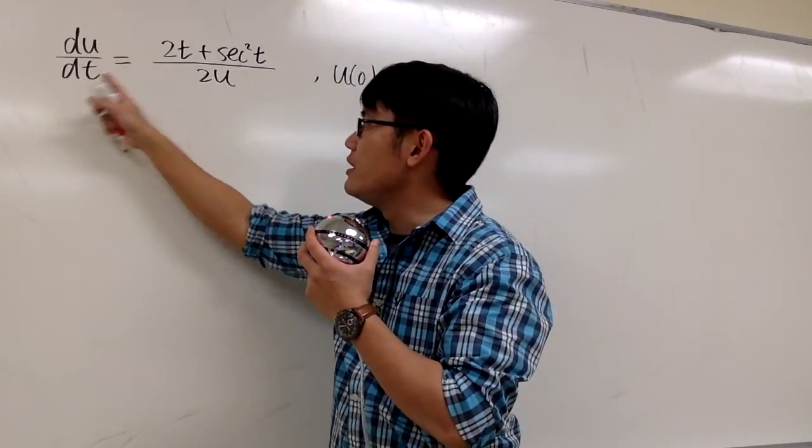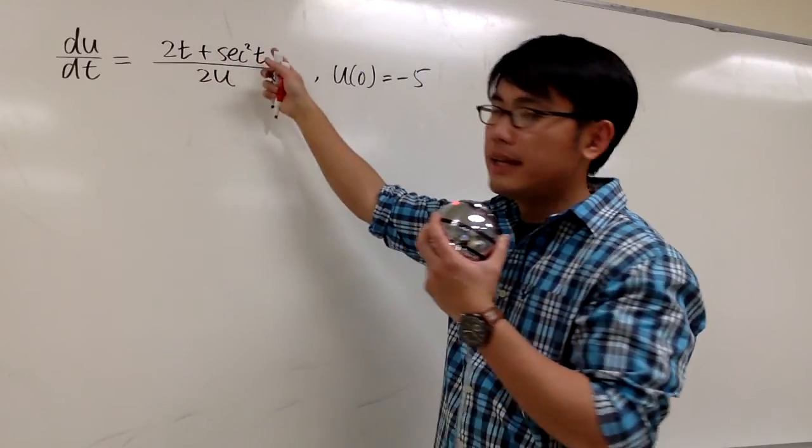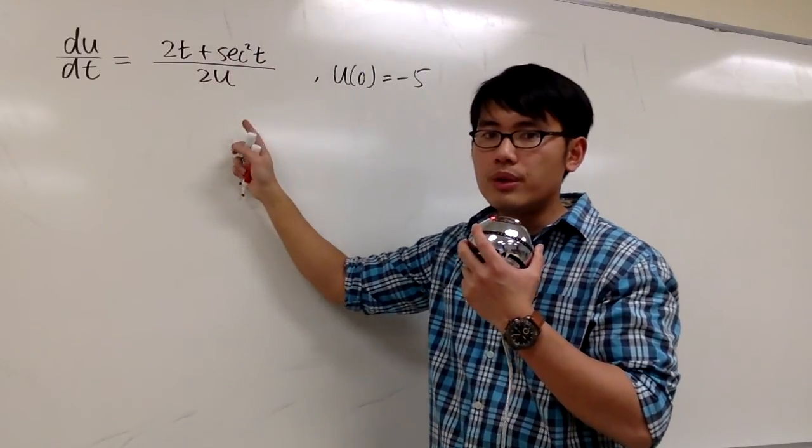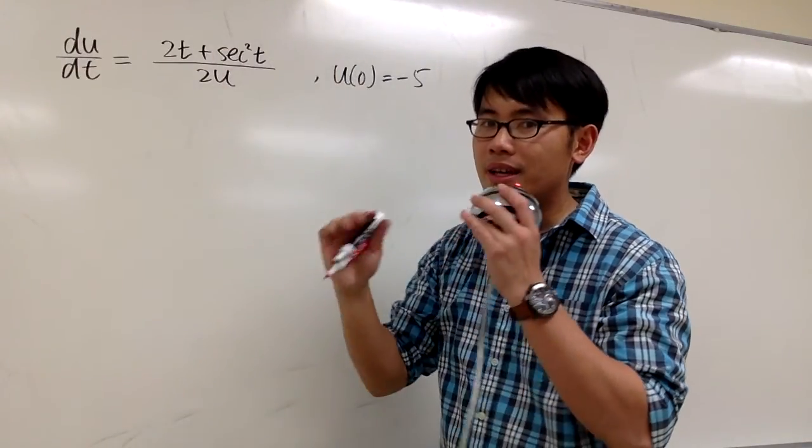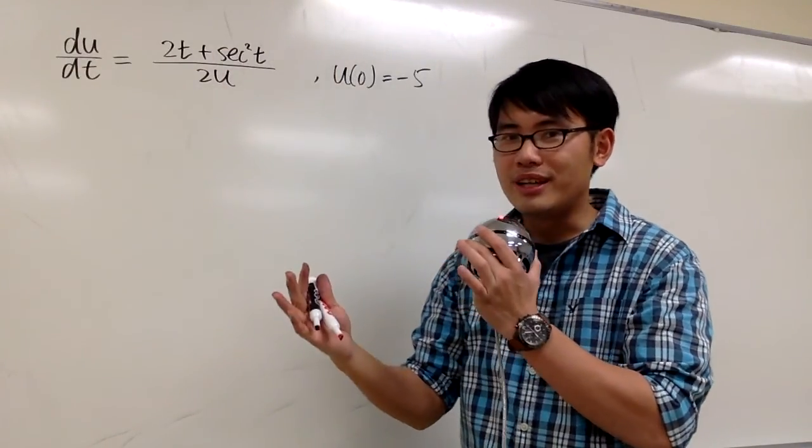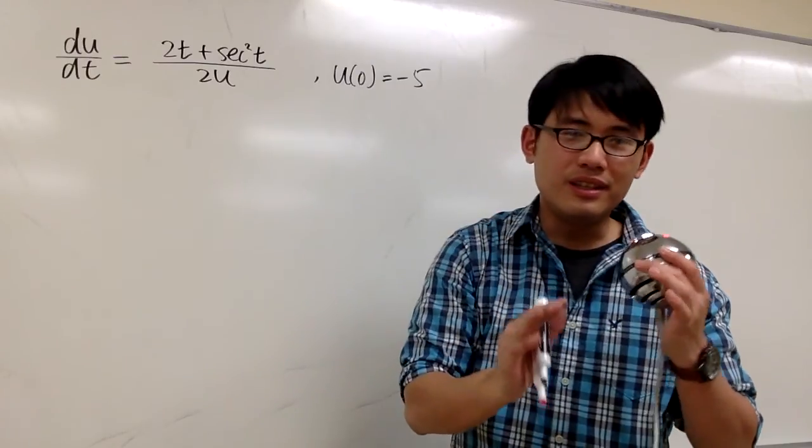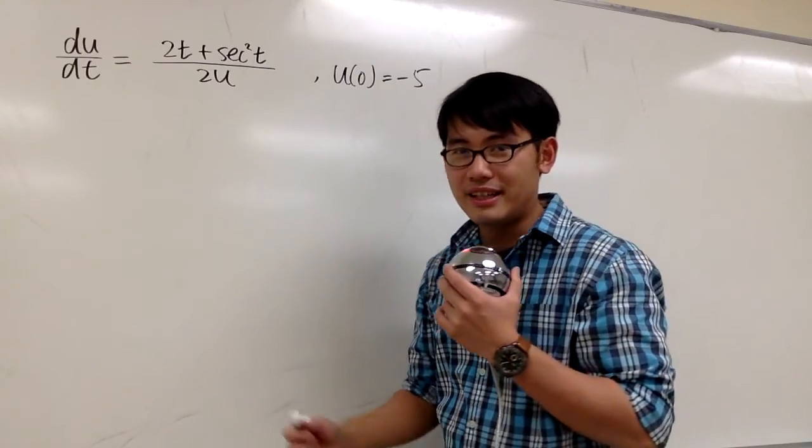Here we have du/dt equals (2t + sec²t)/2u. If we multiply both sides by 2u and multiply both sides by dt, we get all the u's and du together on one side, and all the t's and dt together on the other side. Let's make that happen first.